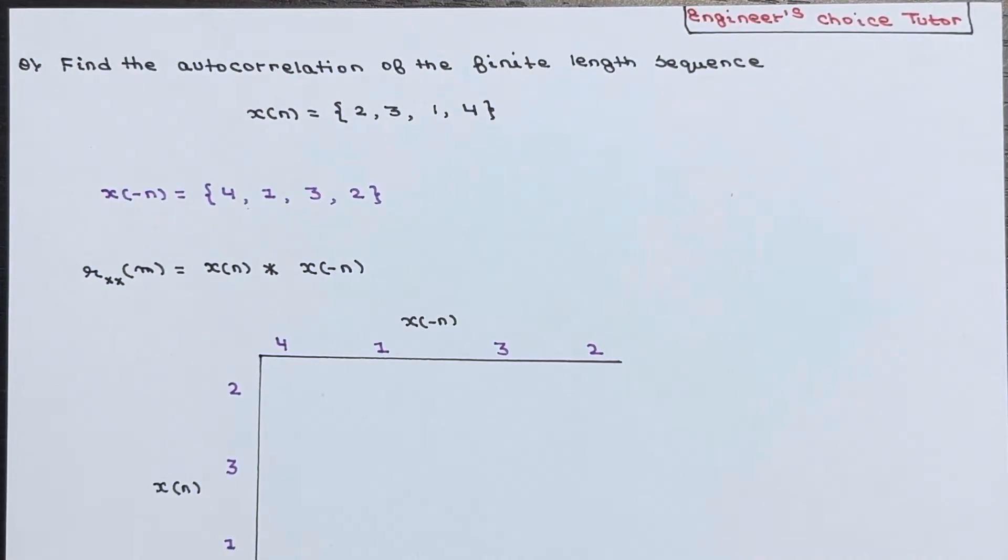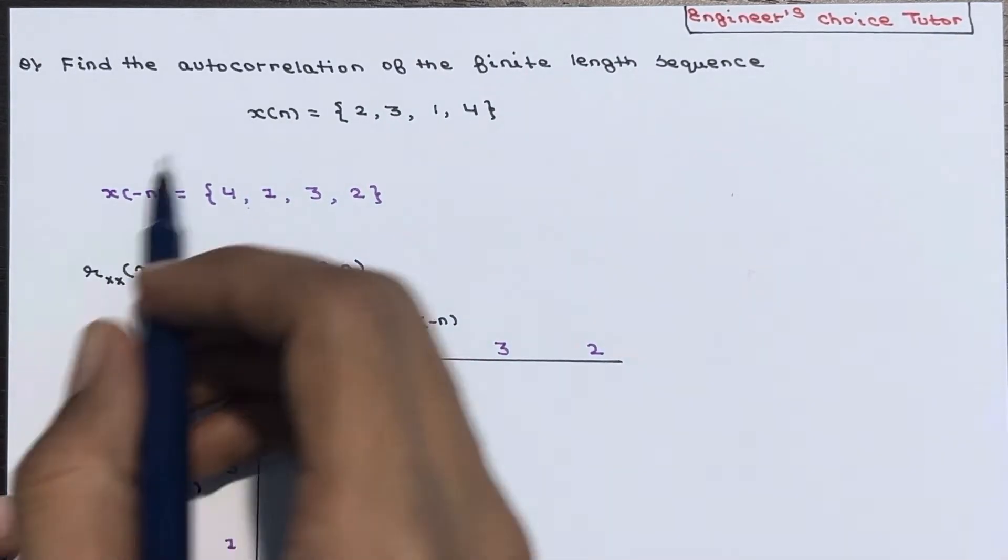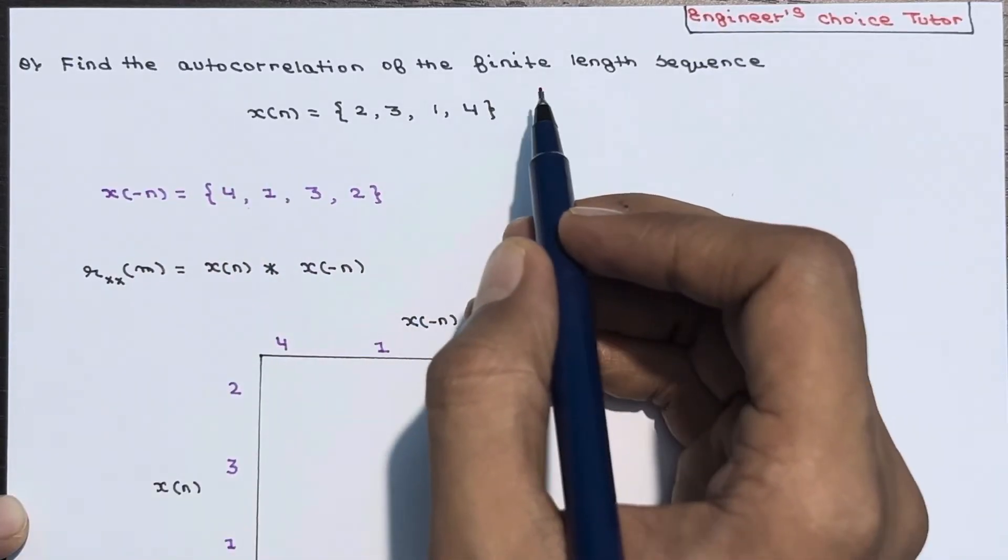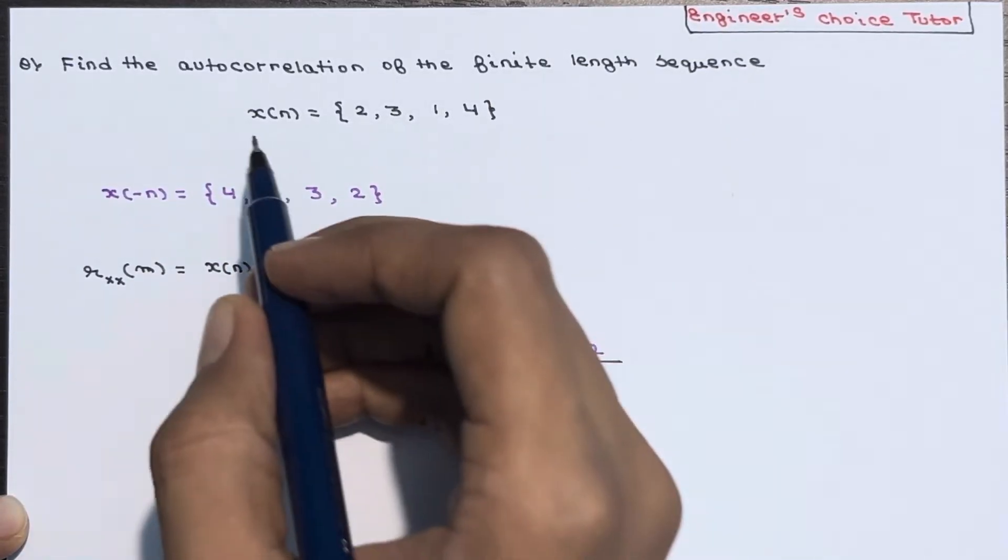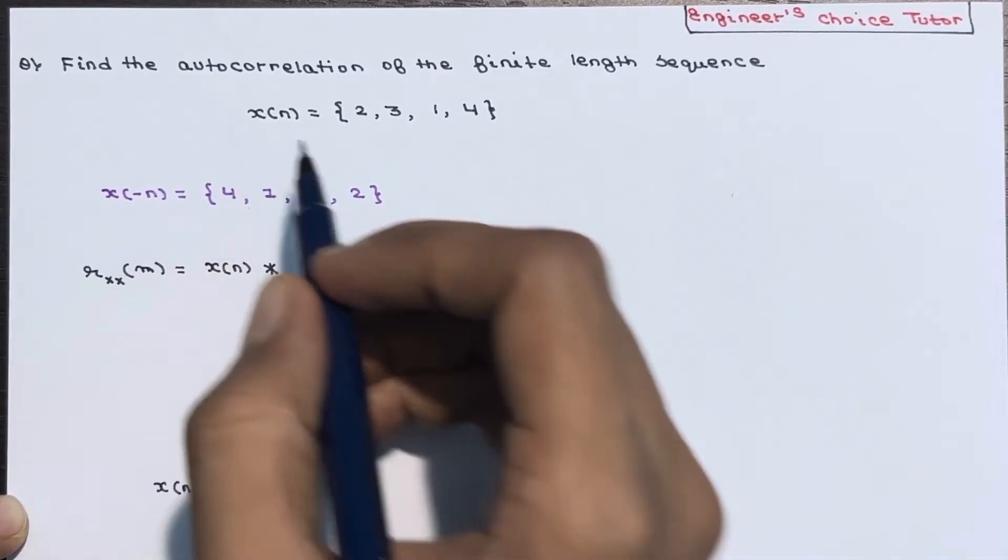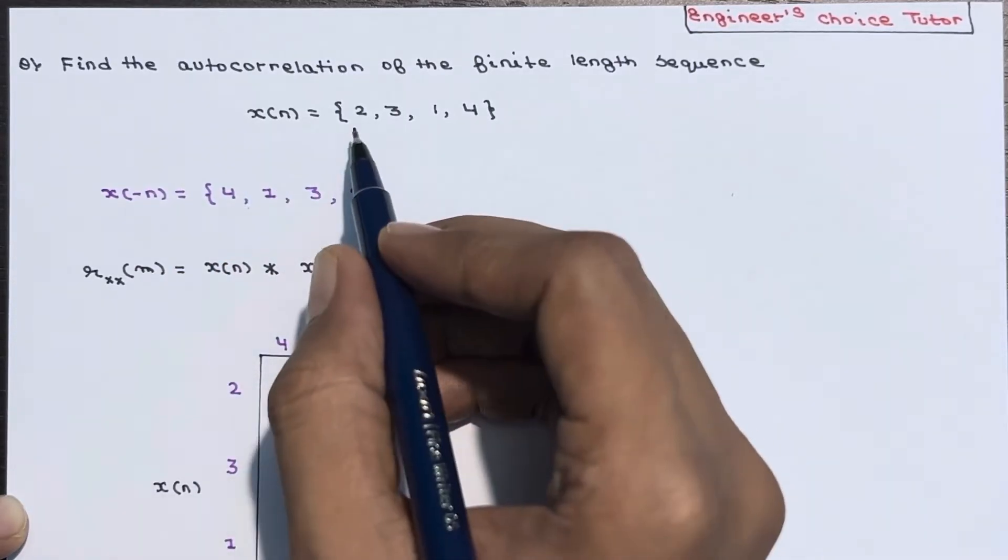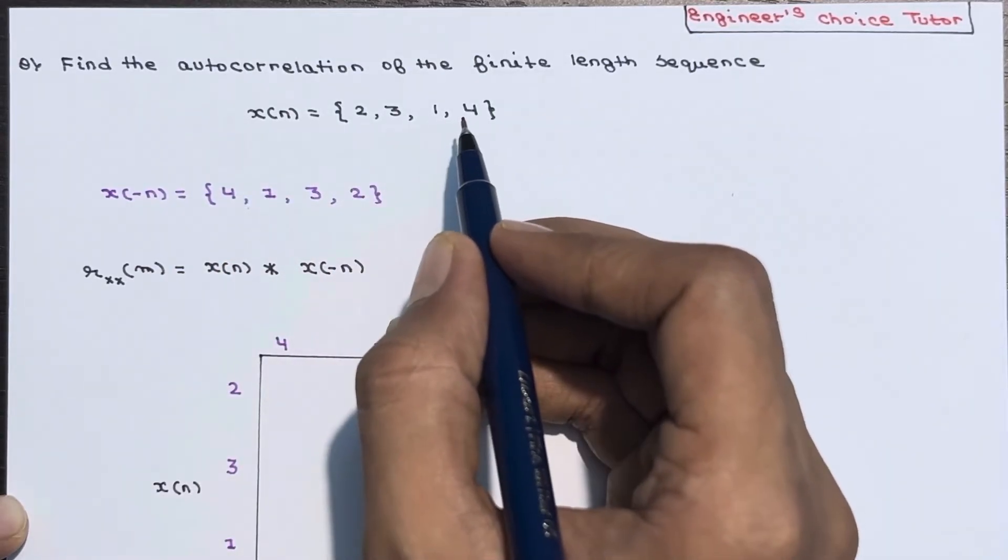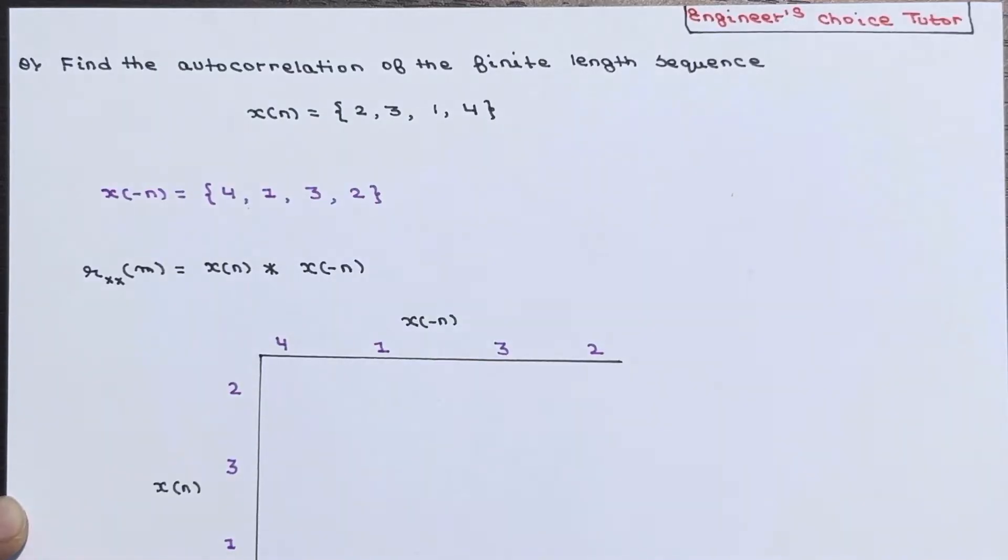Hi everyone, in this lecture we will solve one numerical which is based on autocorrelation. Find the autocorrelation of the finite length sequence x(n), and this x(n) is given as 2, 3, 1, 4. You should know how to calculate the correlation or computation of correlation.